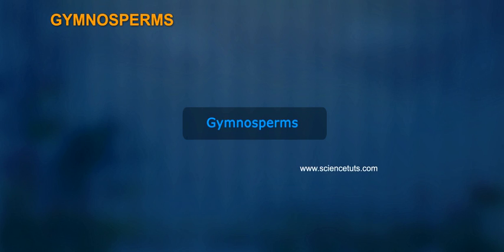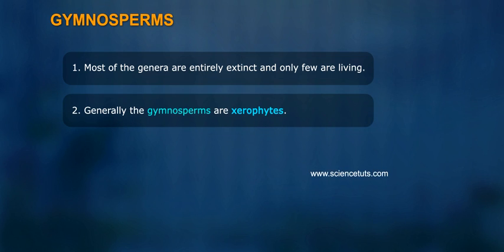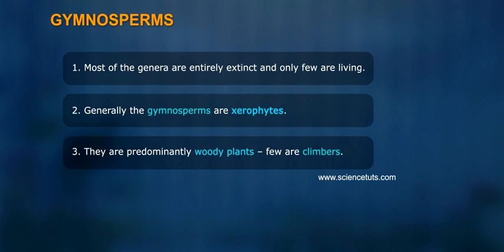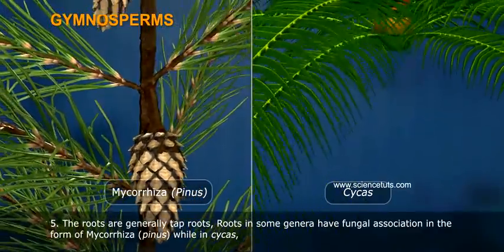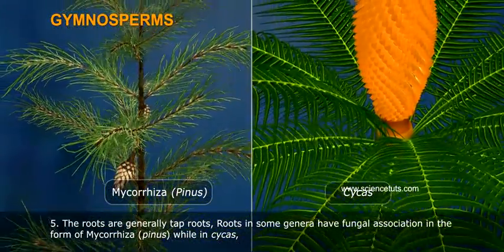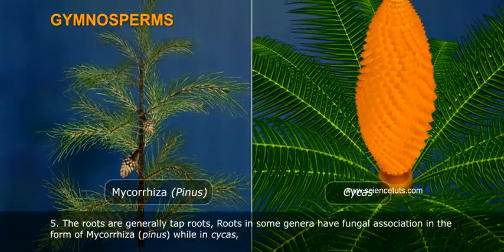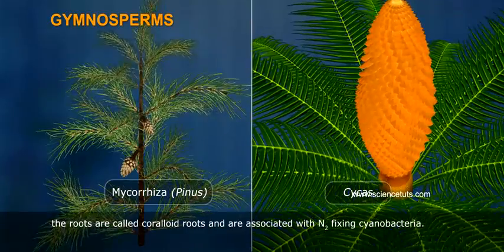Gymnosperms are characterized by the following features. One, most of the genera are entirely extinct and only a few are living. Two, generally the gymnosperms are xerophytes. Three, they are predominantly woody plants; few are climbers. Four, the sporophytic plant is evergreen, and the tallest living gymnosperm is Sequoia. Five, the roots are generally tap roots. Roots in some genera have fungal association in the form of mycorrhiza, such as Pinus. The roots of Cycas are called coraloid roots and are associated with nitrogen-fixing cyanobacteria.